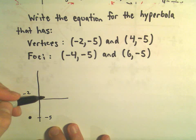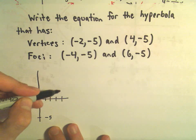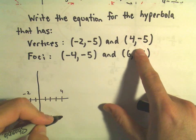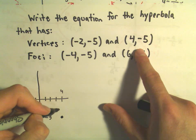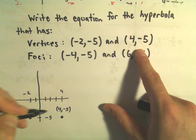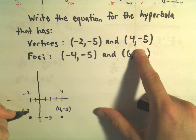The other vertex is going to be at 1, 2, 3, positive 4 comma negative 5. So let's see, here's (4, -5), and here's (-2, -5).